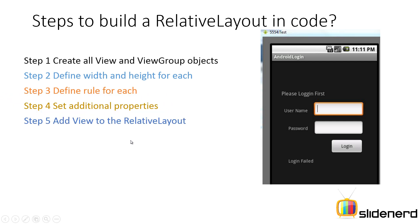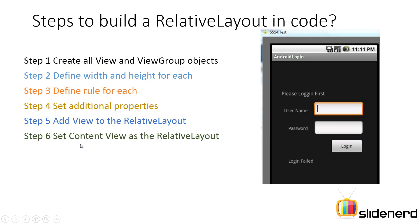In step five you add these controls inside the relative layout. So far you've defined everything separately — here you simply mix all of them together by adding the views to the relative layout. Ultimately in step six you use the setContentView method and pass the relative layout object to tell the Android system that this activity will have an appearance defined by this relative layout object. In the next video we are going to actually follow these six steps and build a user interface that looks exactly like this using relative layouts and only Java code.